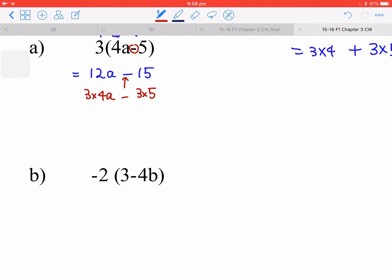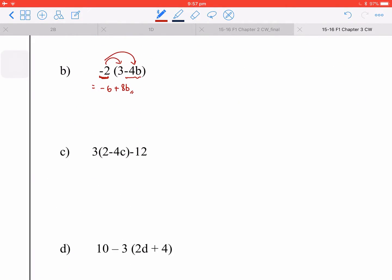The next one is a little bit tricky. You multiply it inside. For the first one, negative 2 times 3, that is negative 6. And then for the next one will be negative 2 times negative 4b. So negative times negative gives you positive—2 times 4b, that is 8b.